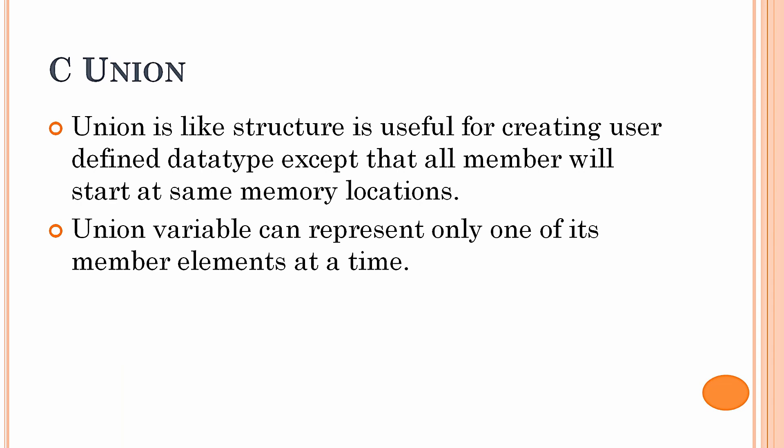Unions, like structures, are useful for creating user-defined data types, except that all members will start at the same memory location. In the case of structures, they follow consequent memory locations starting from the first element, but in the case of unions, all elements start from the base address of the union. That is the major difference between structure and union; other than that, both are the same.